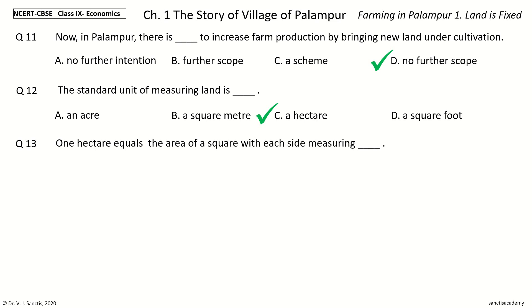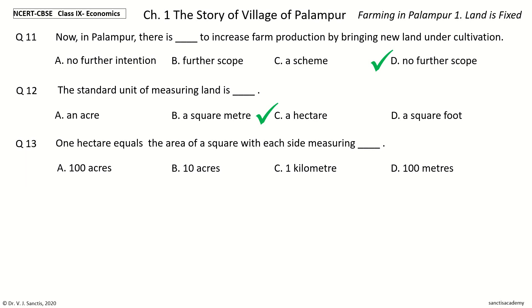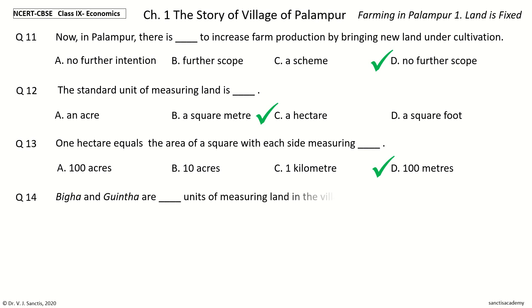Question 13: One hectare equals the area of a square with each side measuring Dash. The options are 100 acres, 10 acres, 1 kilometer, 100 meters. Your time to choose. And the answer is 100 meters. So, one hectare equals the area of a square with each side measuring 100 meters.